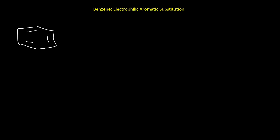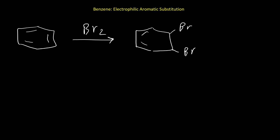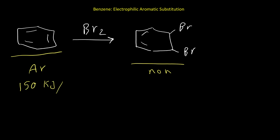As I explained in the aromaticity video, benzene and aromatic compounds in general would not like to have addition reactions. For example, if we use Br2 with benzene, we're not going to get an addition product, because benzene is aromatic but that product would be non-aromatic. Aromatic compounds are very stable — about 150 kilojoules per mole — so the system would not like to lose aromaticity.